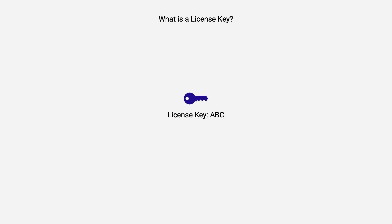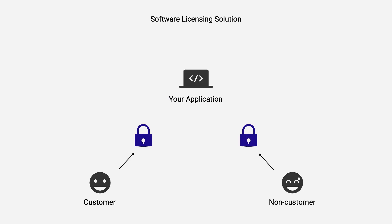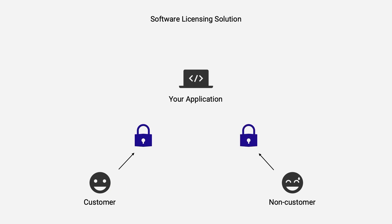First of all, what do I mean when I say license key? In a standard setup, a license key is given out to customers upon successful payment of your product. When they try to enter your software application, they will have to insert that license key in order to get access to the product. If you have subscription payments set up, the license key should also be able to restrict access from people who did not pay their latest subscription fee or cancelled their subscription.